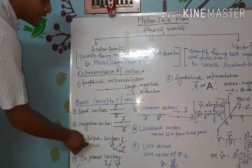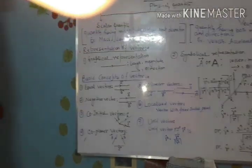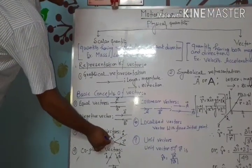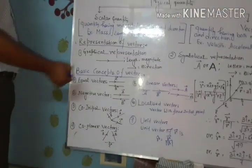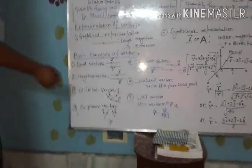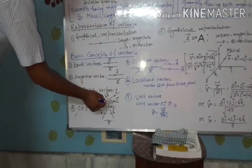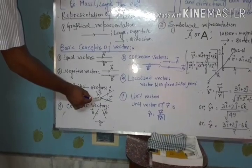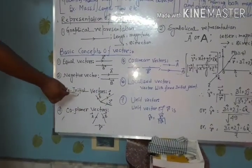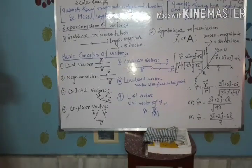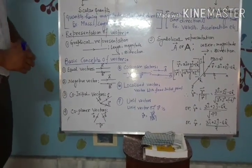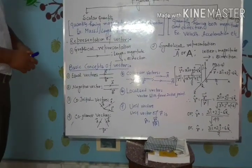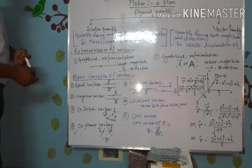Next: Coinitial Vectors. Whenever any number of vectors start from a common point, then all the vectors are said to be Coinitial Vectors. See the diagram — vectors A, B, and C all start from this common point, so these three vectors are Coinitial. Remember, for Coinitiality, magnitude and direction may or may not be the same; the only condition required is that they start from the same initial point.